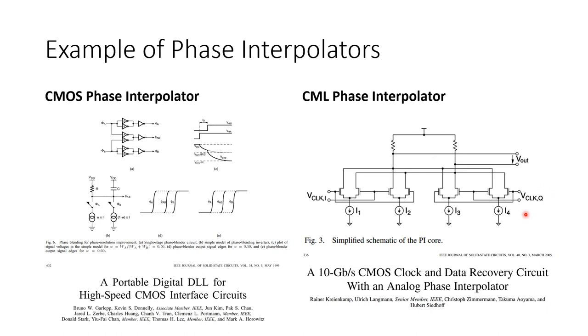I1, I2, I3, and I4. So depending on which of these tail current magnitudes is largest, you will end up with an output phase here that is approximately equal to that input clock phase.